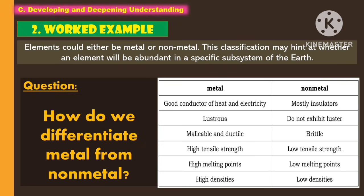Metals are good conductors of heat and electricity, while non-metals are mostly insulators. Metals have luster, while non-metals do not exhibit this. Metals are malleable and ductile, while non-metals are brittle. Metals have high tensile strength, whereas non-metals have low tensile strength. Metals have high melting points, whereas non-metals have low melting points. Metals have high densities, while non-metals have low densities.